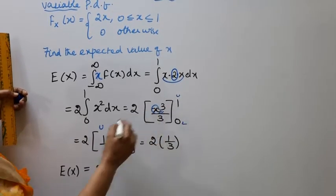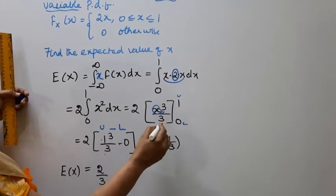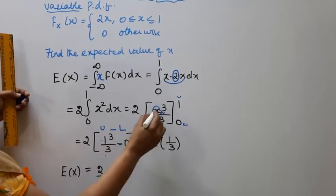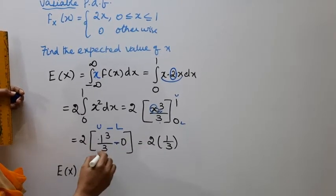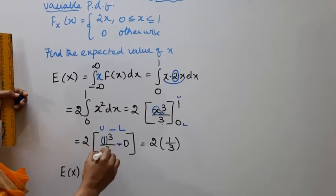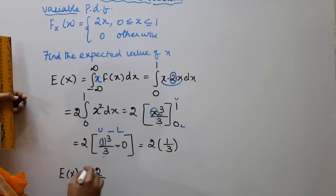This equals 2 times x cubed by 3, upper limit minus lower limit. 1 cubed by 3 minus 0 cubed by 3. 0 cubed by 3 is 0, that is 2 bracket 1 by 3, 1 cube 1 by 3 minus 0. 2 into 1 by 3 equals 2 by 3.